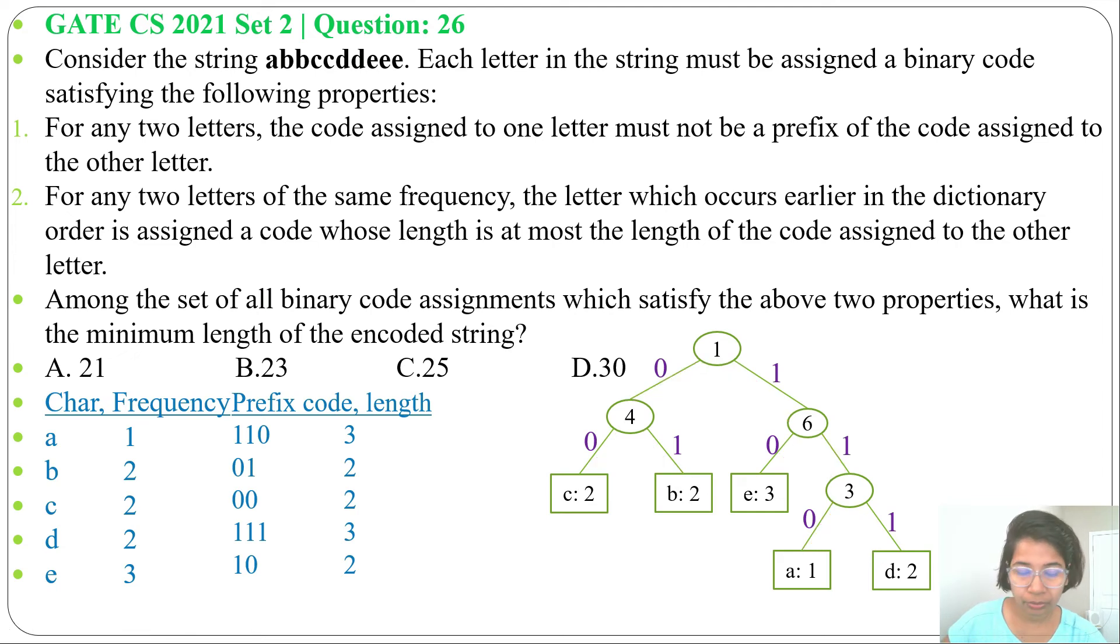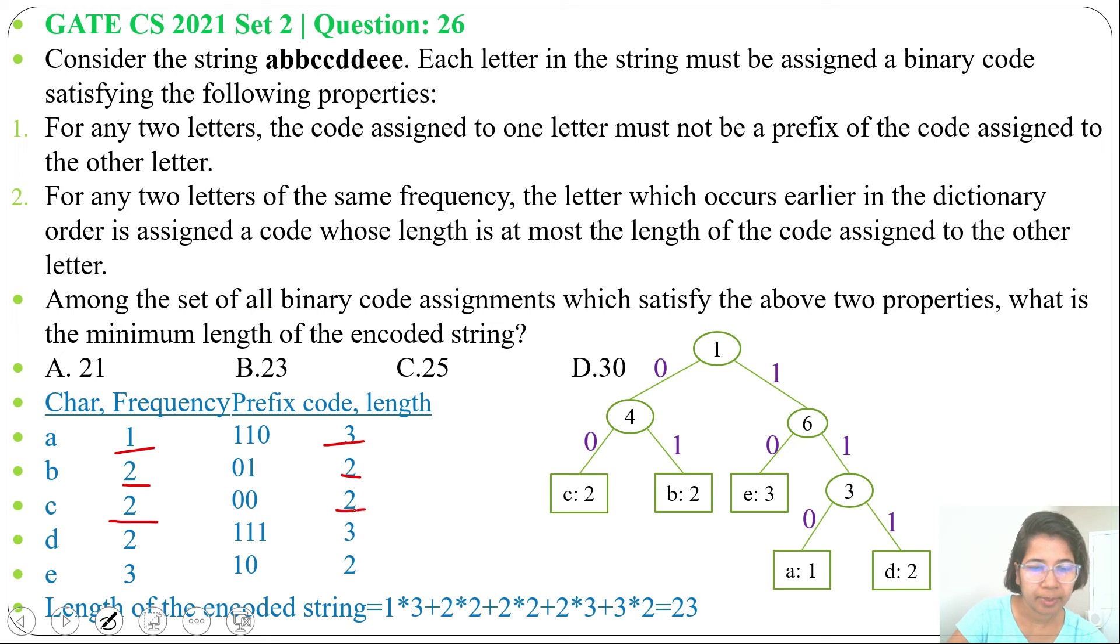Next we need to find the length of the encoded string. So we'll multiply 1 with 3, plus 2 with 2, plus 2 multiplied by 2 for 'c', plus 2 multiplied by 3 for 'd', plus 3 multiplied by 2 for 'e'. So it will be 3 plus 4 plus 4 plus 6 plus 6, which equals 23. So the answer will be option B, 23.